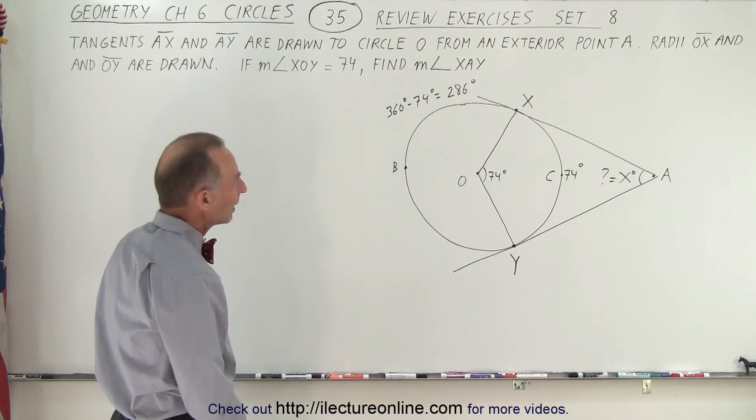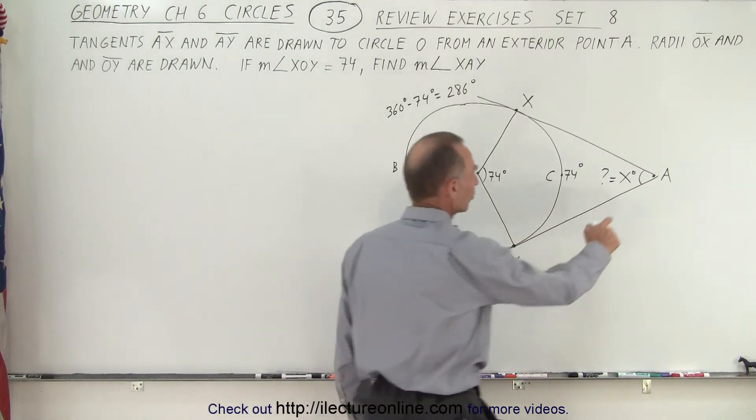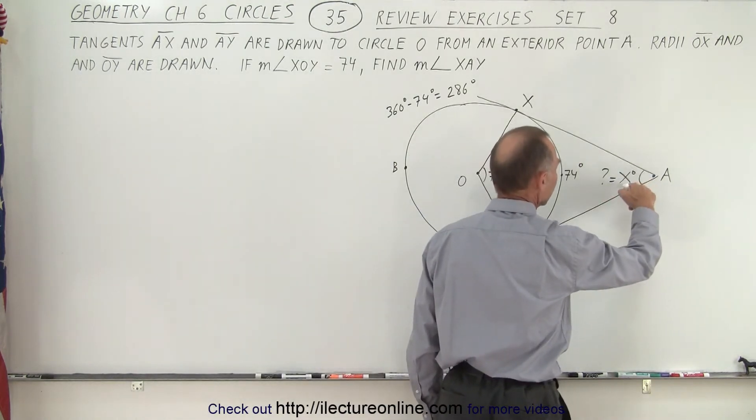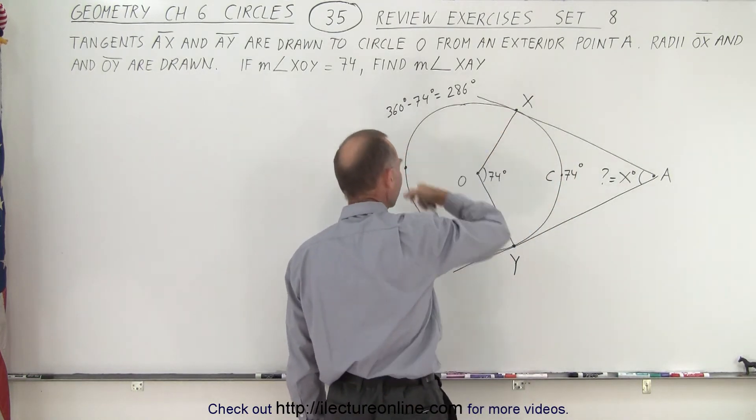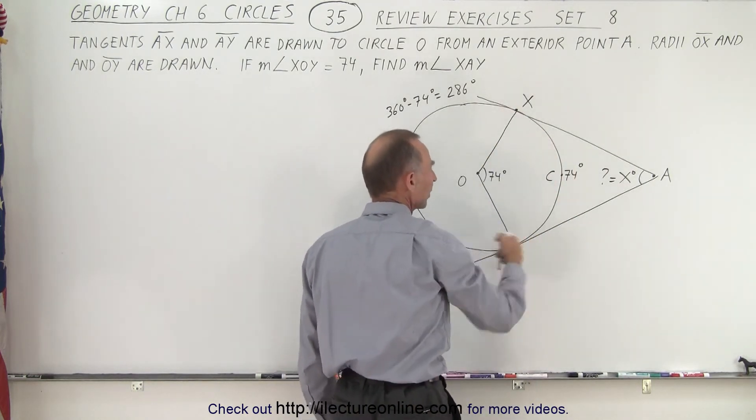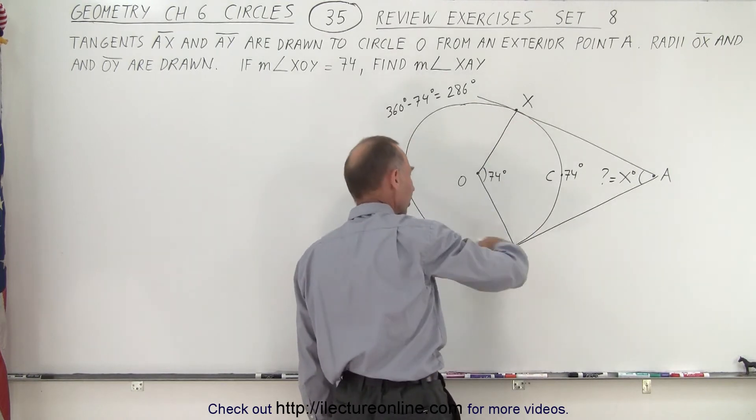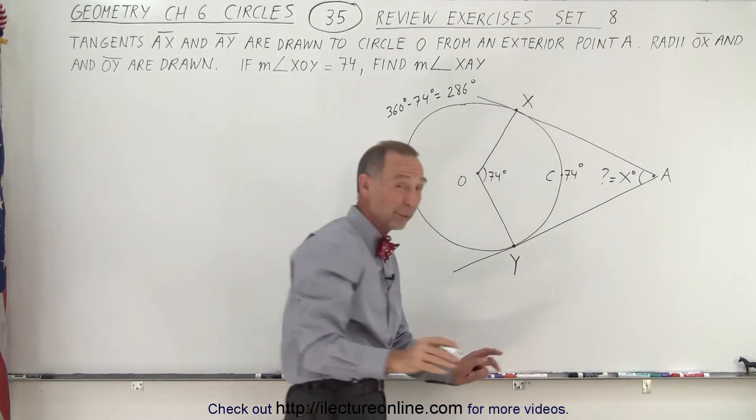So now what we can say is that the measure of this angle right here is equal to half the difference between the measure of this angle and the measure of this angle. Or the measure of this arc and the measure of this arc. That's a better way of saying it.